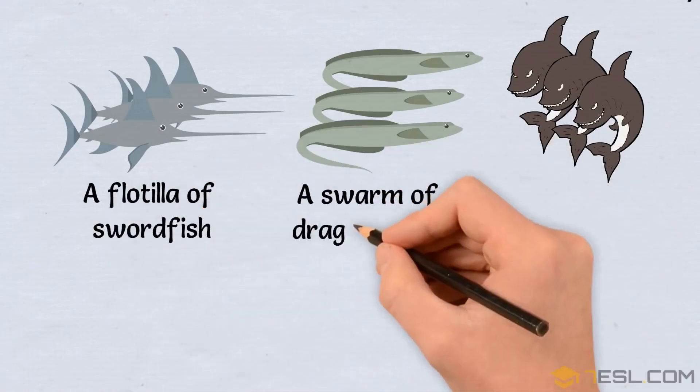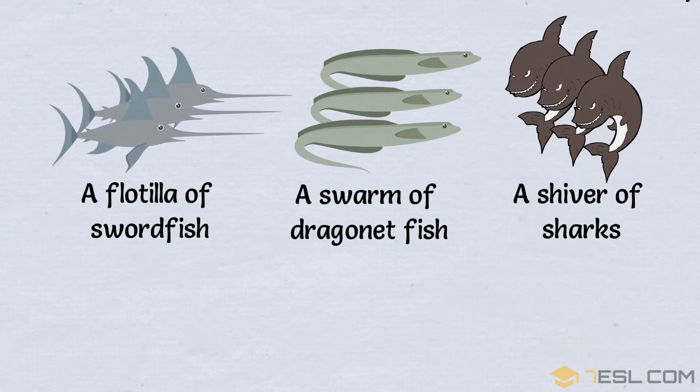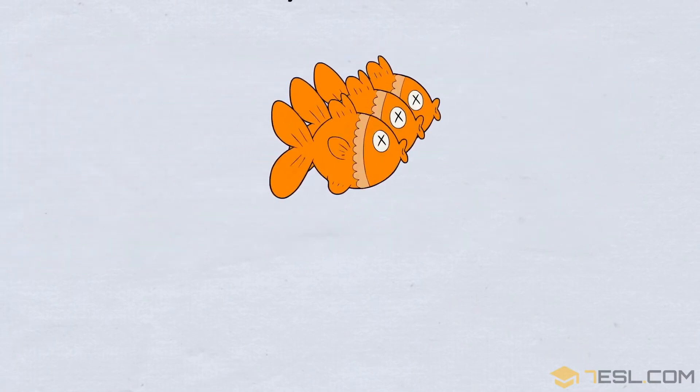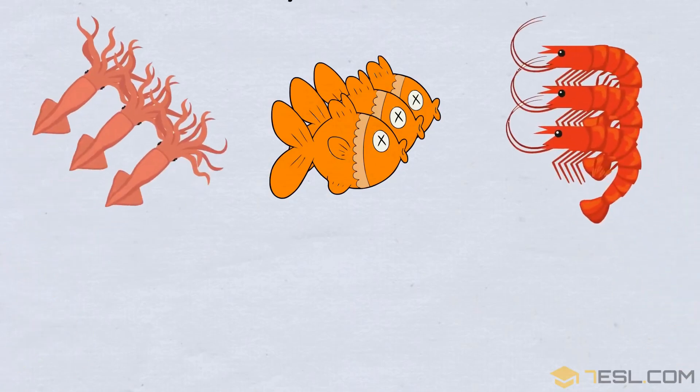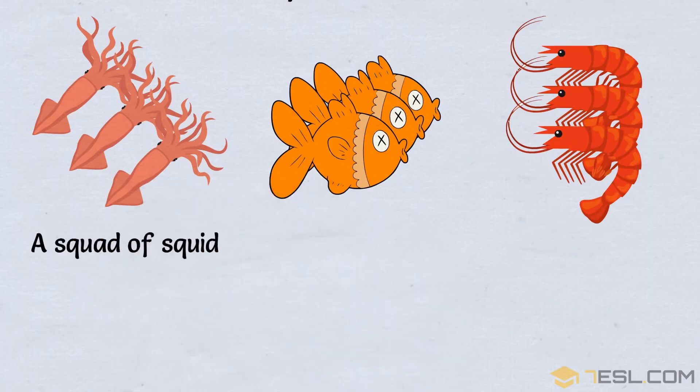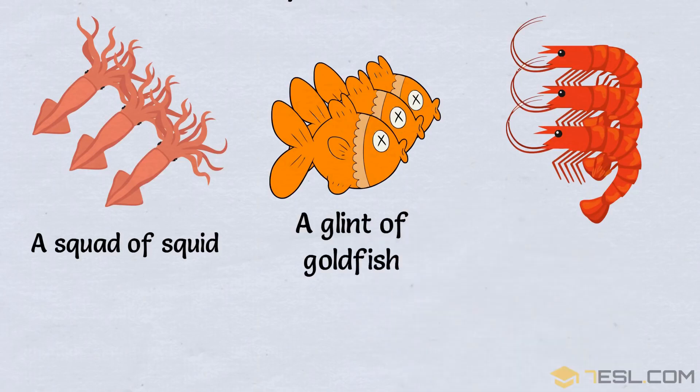A swarm of dragonet fish, a shiver of sharks, a squad of squid, a glint of goldfish, a troop of shrimp.